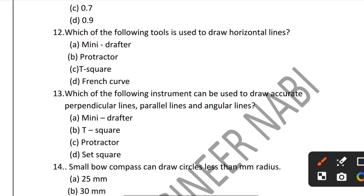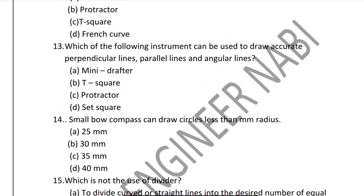Question 13: Which drafting instrument can be used to draw accurate perpendicular lines, parallel lines, and angular lines? Options include mini-drafter, T-square, and protractor. The mini-drafter can draw parallel, angular, and perpendicular lines, so the mini-drafter is the correct answer.